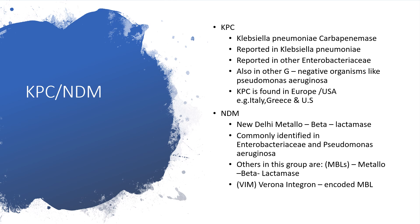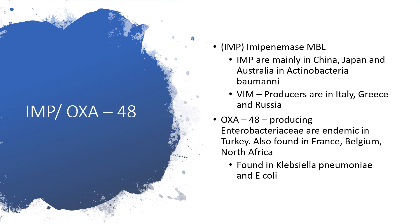NDM — New Delhi metallo-beta-lactamase, from India — is commonly identified in Enterobacteriaceae and Pseudomonas aeruginosa. Others in this group are metallo-beta-lactamase and Verona integron-encoded metallo-beta-lactamase (VIM). IMP metallo-beta-lactamase is mainly found in China, Japan, and Australia, particularly in Acinetobacter baumannii. VIM producers are in Italy, Greece, and Russia. OXA-48 producing Enterobacteriaceae are endemic in Turkey but are also found in France, Belgium, and North Africa, particularly in Klebsiella pneumoniae and E. coli.